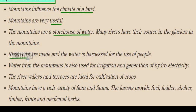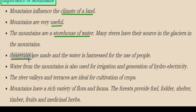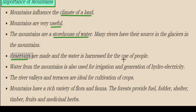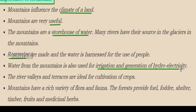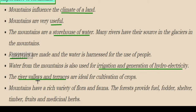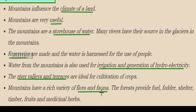The water flowing from mountains is stored in reservoirs, which are large tanks where water is stored for people living around them. This water is also used for irrigation of fields and cultivation of crops, as well as for the generation of electricity. River valleys and terraces formed by mountains are ideal for cultivation.